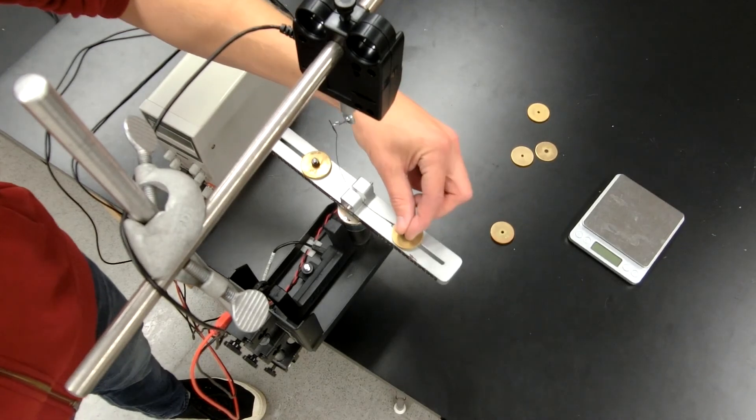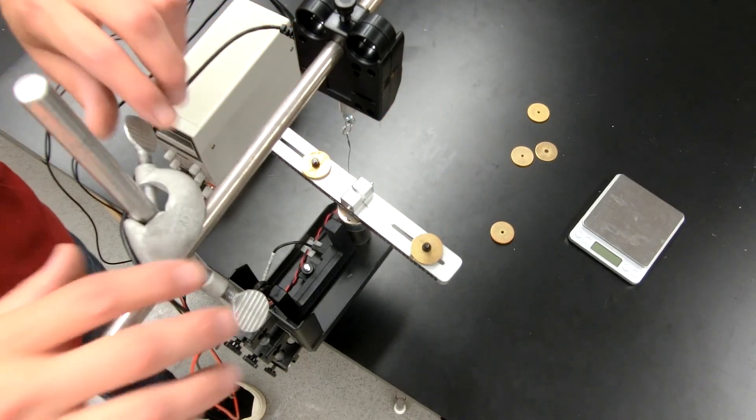The radius of the mass's circular path can be adjusted by changing the height of the force sensor.